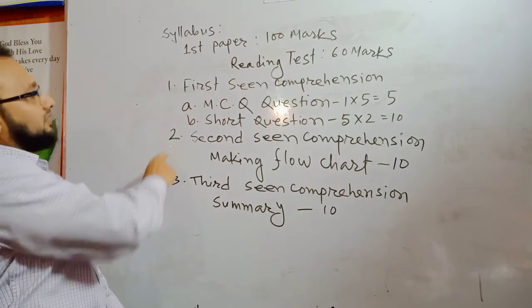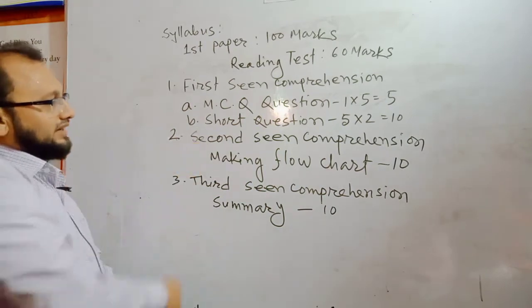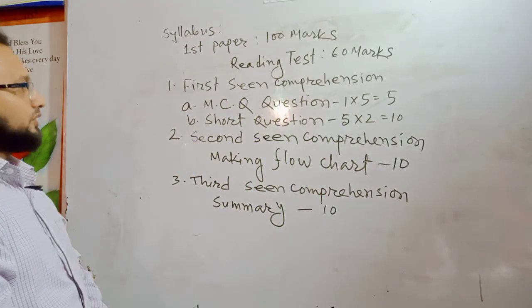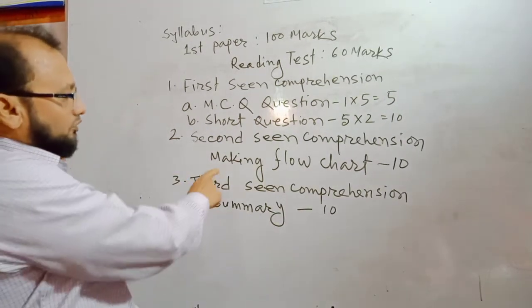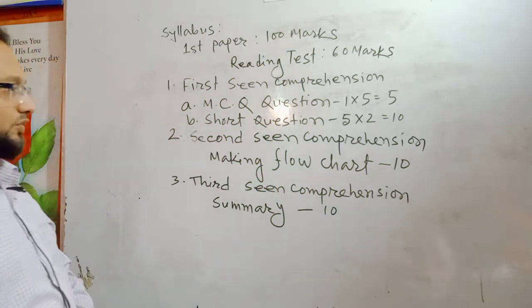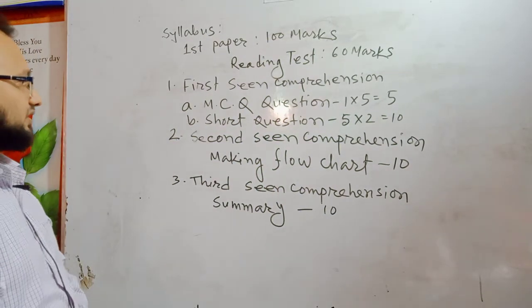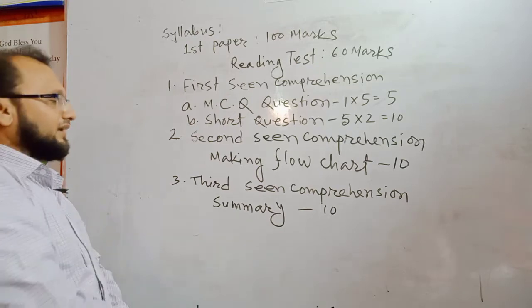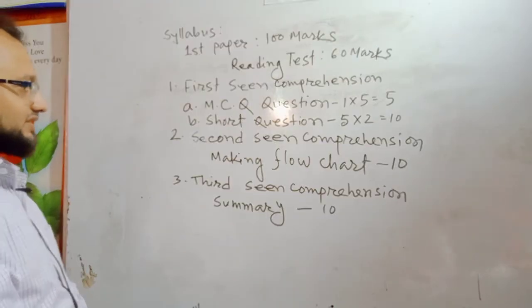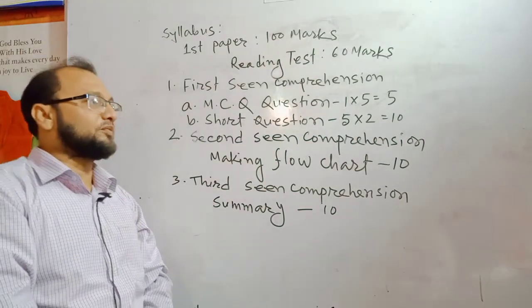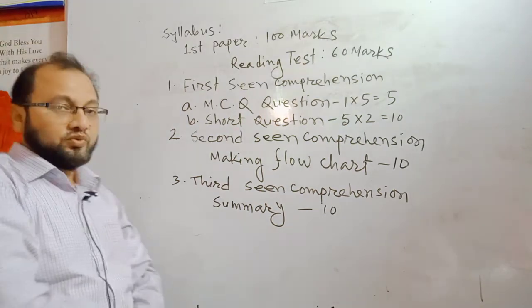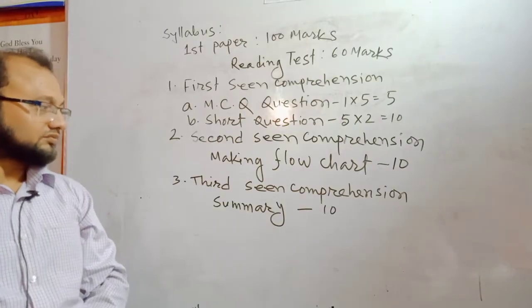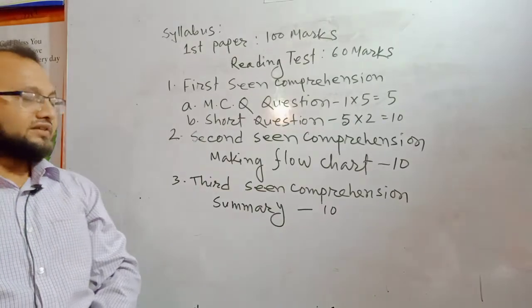Then another reading comprehension — the second reading comprehension — will be set from your textbook. There you will be asked to make a flow chart, and this flow chart carries 10 marks. Then another reading comprehension — the third reading comprehension — will also be selected from your textbook. And here, in the third reading comprehension, you will be asked to make a summary, and this contains 10 marks.